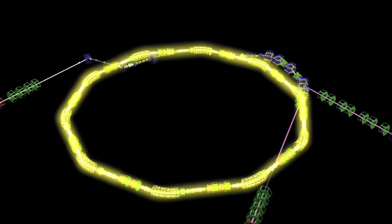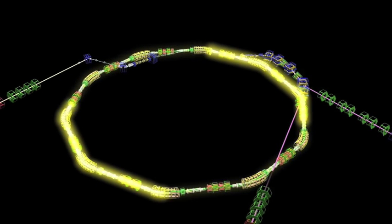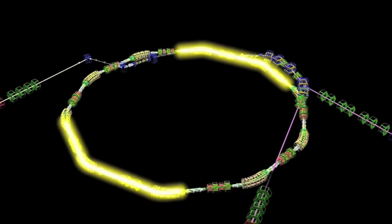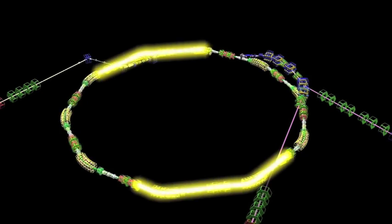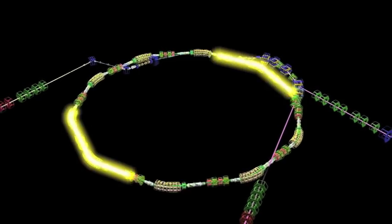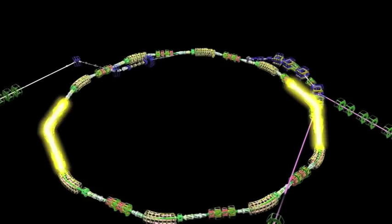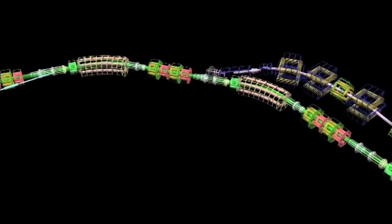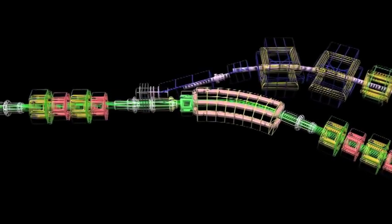Electric fields provide the accelerating forces in ISIS. They also separate the protons into two bunches. As the proton beam is accelerated by the electric fields, the bending magnets need to become stronger and stronger to keep the beam on a circular orbit. The magnetic fields are over 10,000 times more powerful than the magnetic field on the surface of the Earth.